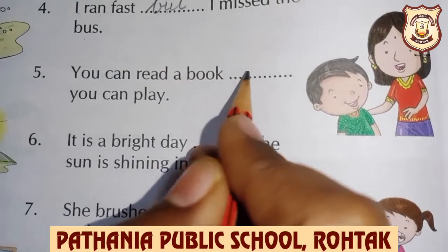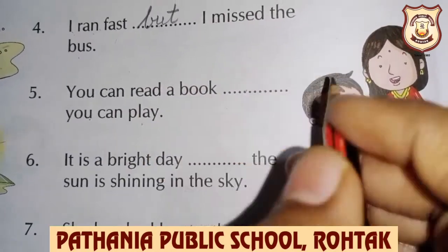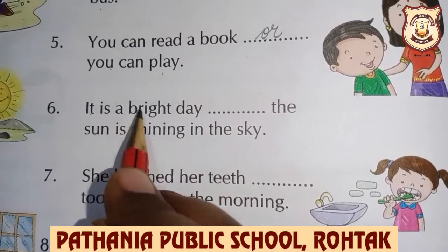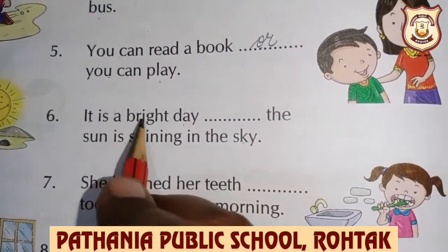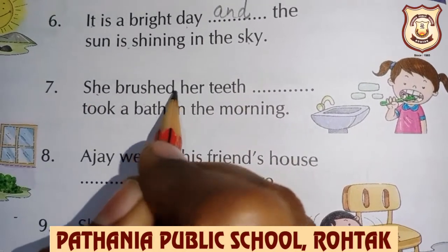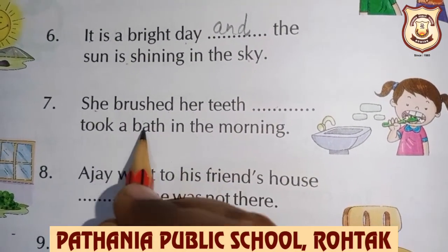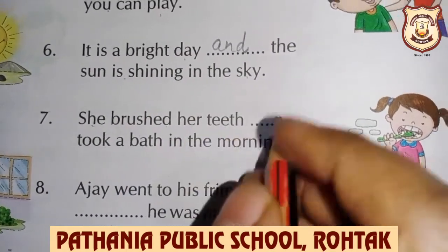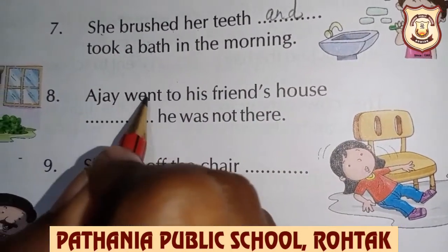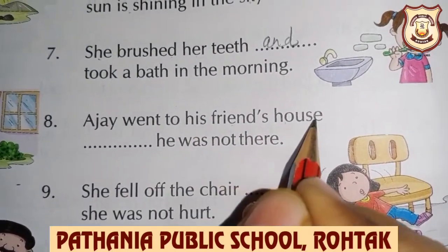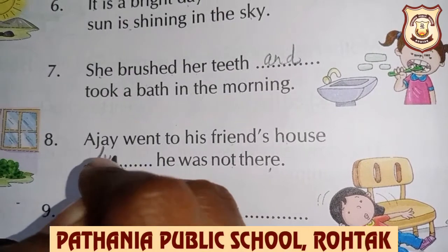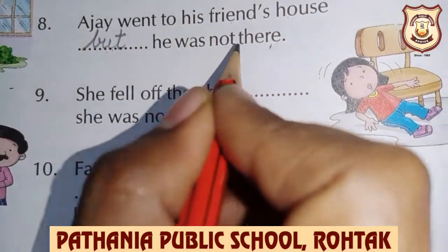'You can read a book or you can play.' — You can either read a book or play. 'It is a bright day and the sun is shining in the sky.' 'She brushed her teeth and took a bath in the morning.' 'Ajay went to his friend's house, but his friend was not there.' — Ajay went to his friend's house but his friend was not home.